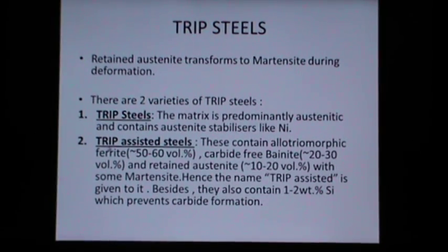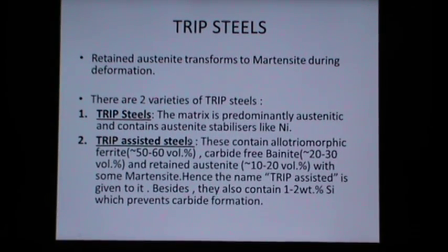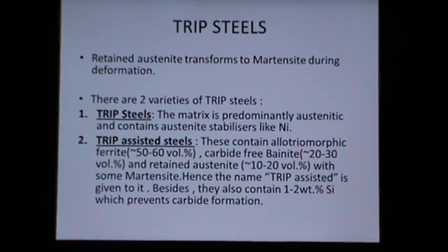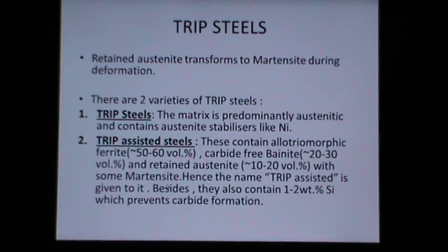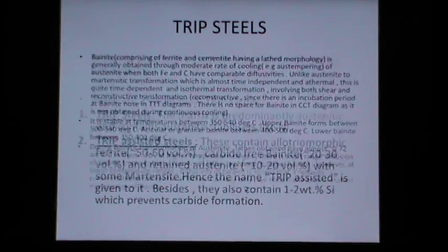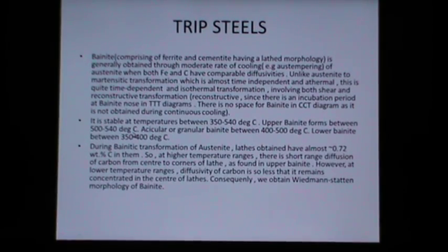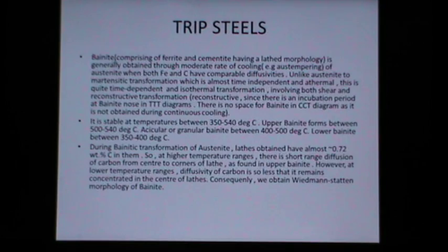The second variety is the TRIP-assisted steels, which contain more allotriomorphic ferrite — about 50 to 60 volume percent — carbide-free bainite at 20 to 30 volume percent, and retained austenite about 10 to 20 volume percent with some martensite. Hence the name TRIP-assisted is given. They also contain 1 to 2 weight percent of silicon, which prevents carbide formation.